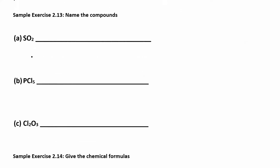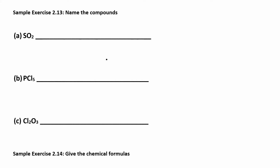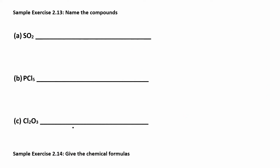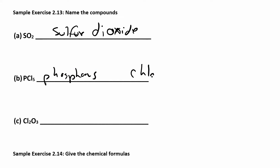Let's try more examples and convert formulas to names. SO2: sulfur and oxygen. The name sulfur doesn't change, and oxygen becomes oxide. I have one sulfur — don't start with mono — and two oxygens, so that's dioxide. The answer is sulfur dioxide.